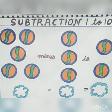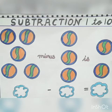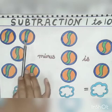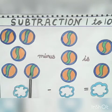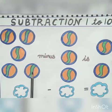Now let's understand with another example. There was a boy named Rohan and he was very fond of playing with balls, so he asked his father to give him balls. His father bought some balls for him. Let's count: 1, 2, 3, 4, 5. Rohan's father gave him 5 balls.